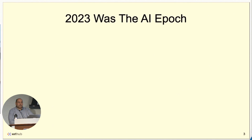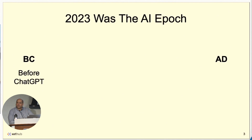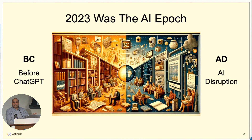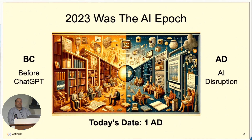It's been a pretty interesting couple of years. Feels like we can divide the world into two halves now since 2023 — BC and AD: before ChatGPT and the AI disruption. I had to work a bit to get the acronyms to line up, but I think this does a good job of reflecting how much the world has changed. If we're at this transition, we are beginning the AI disruption. It's really important that everybody remember that we're at 1 AD right now — we're at the infancy of this disruption.